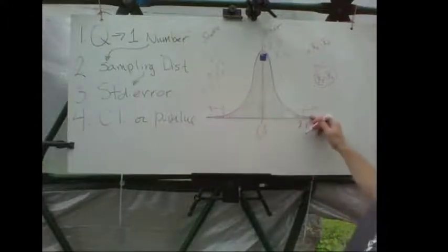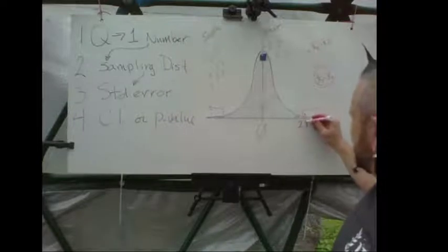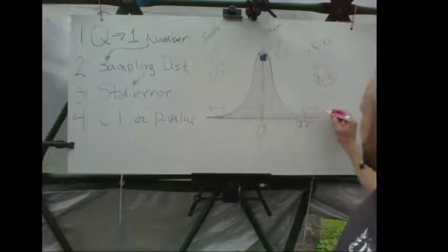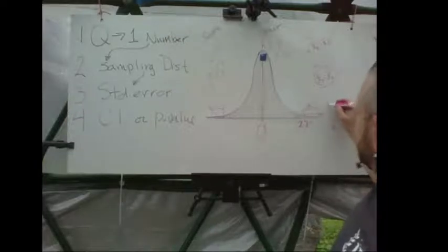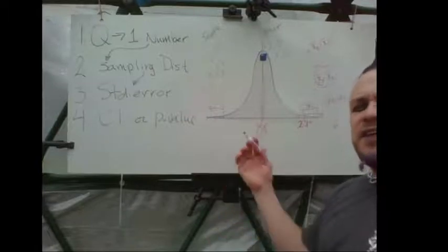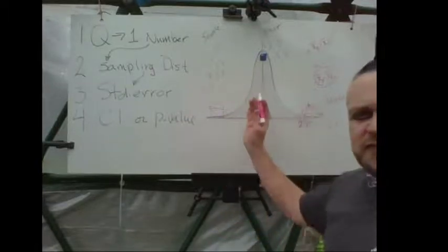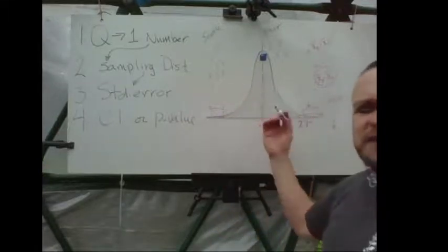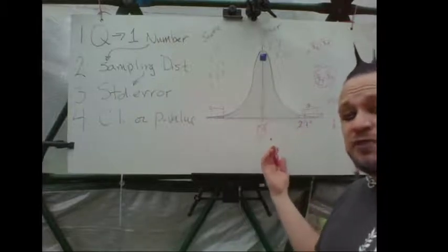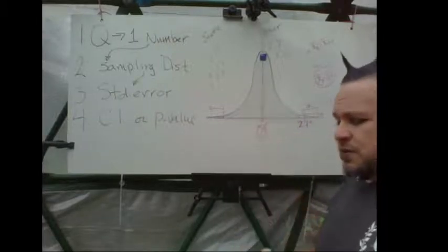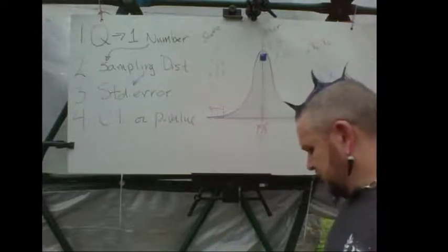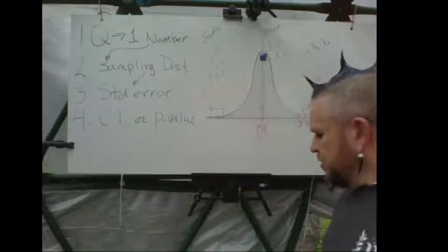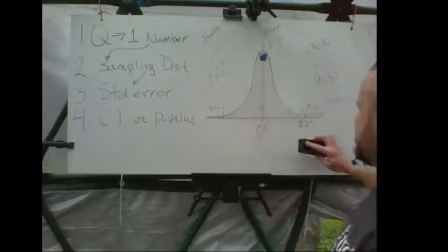Then you place your observed difference in the distribution. If that area from there out is P, and P is less than alpha, you reject the null hypothesis and conclude there is a significant difference — in this case, the Seattle group has a significantly higher average temperature than the other group. You can use a confidence interval interpretation or a hypothesis test approach.